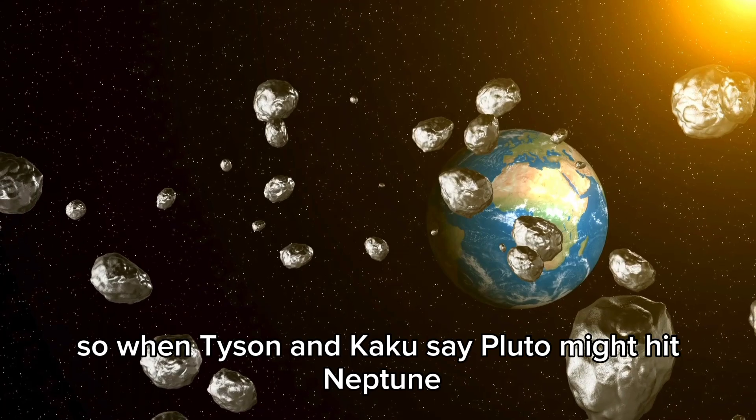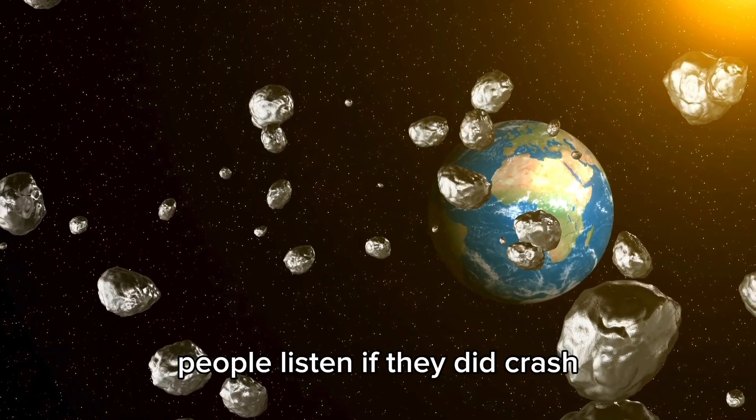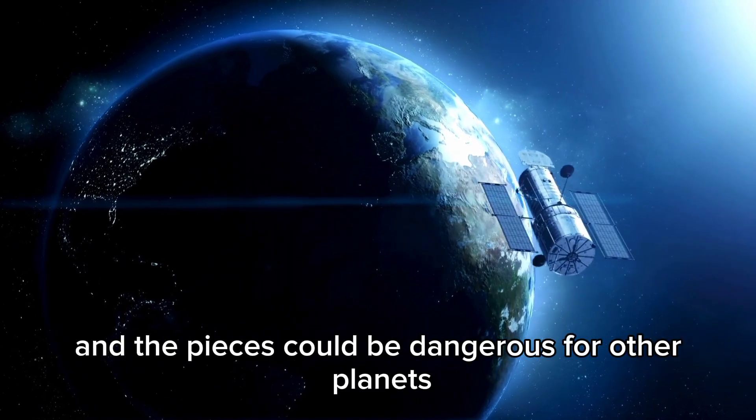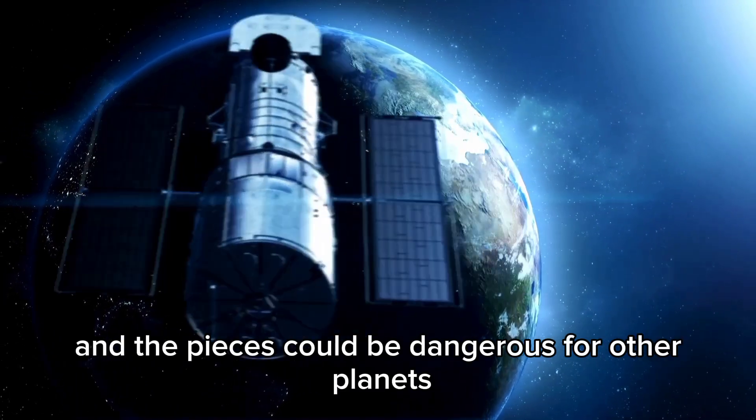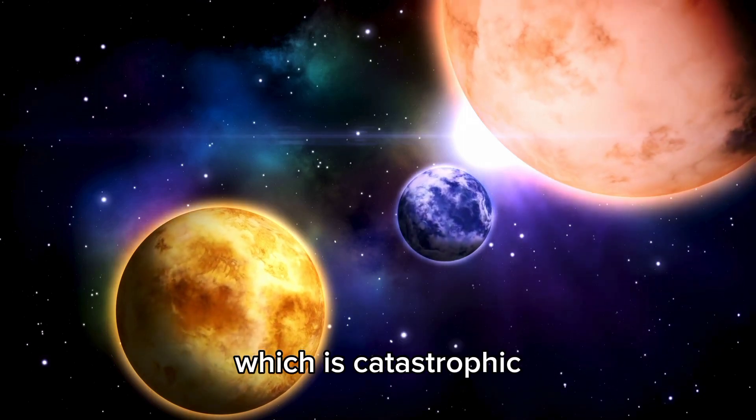So, when Tyson and Kaku say Pluto might hit Neptune, people listen. If they did crash, it would be a big deal. Pluto would probably break apart and the pieces could be dangerous for other planets, even Earth. Neptune's air and orbit could get messed up too, which is catastrophic.